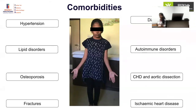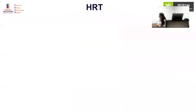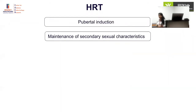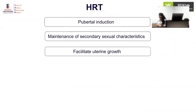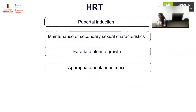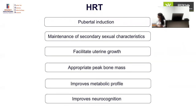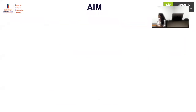Hormone replacement therapy in Turner syndrome is mainly given for pubertal induction, maintenance of secondary sexual characteristics, facilitation of uterine growth, achievement of appropriate bone mass, and improvement of metabolic profile through possible effects on body composition. It may also possibly improve neurocognition.